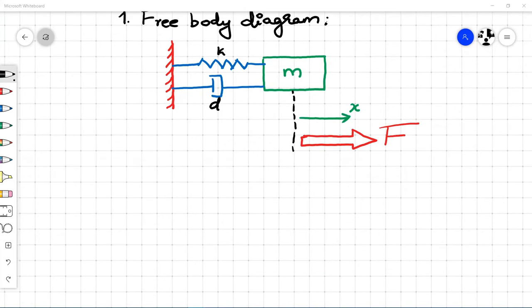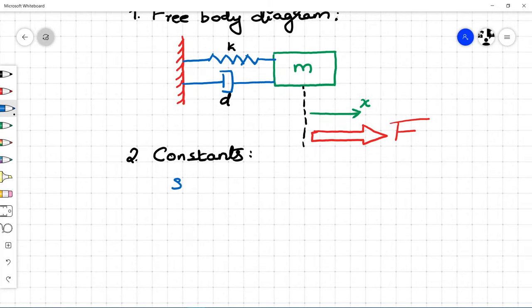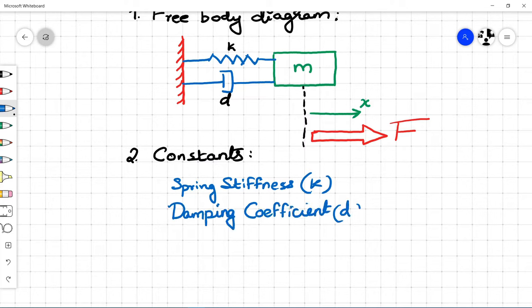Second step is to define the constants for the system. In our case, spring constant or spring stiffness, damper coefficient, and mass are the constants.